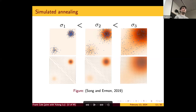Question: Is there a trade-off as you make the noise level larger? Yes — you're incurring more bias. As you increase the noise level, you're not really learning the distribution you're interested in; you're learning a noisy version. You definitely don't get it for free.